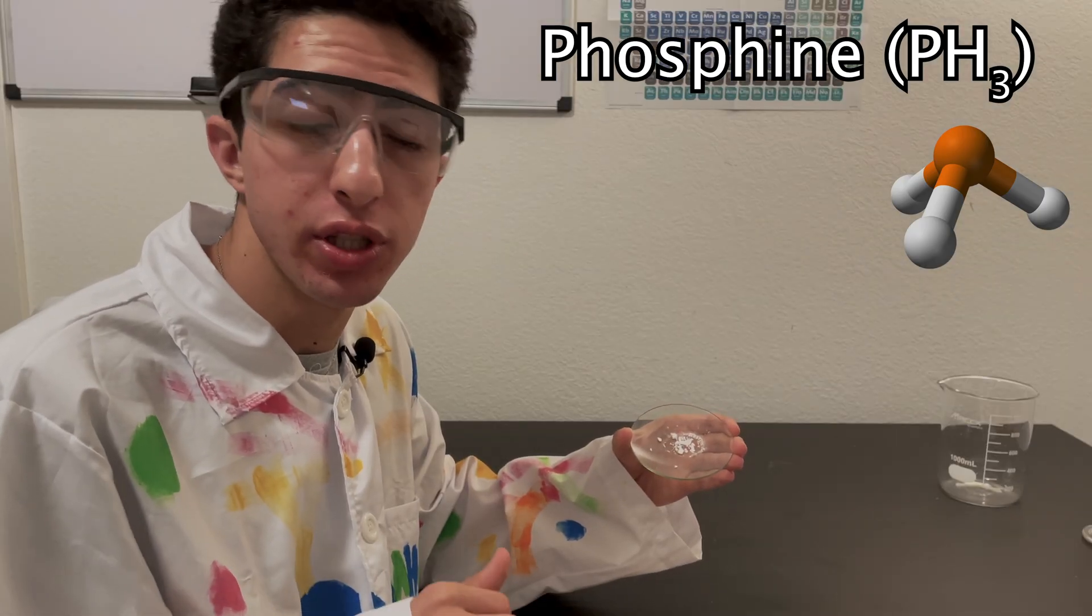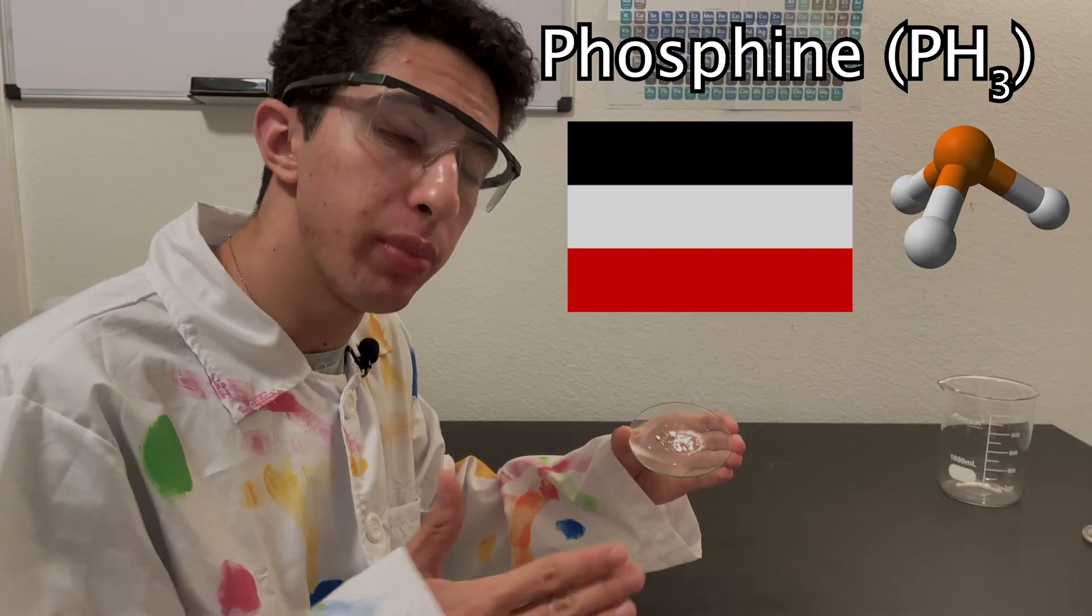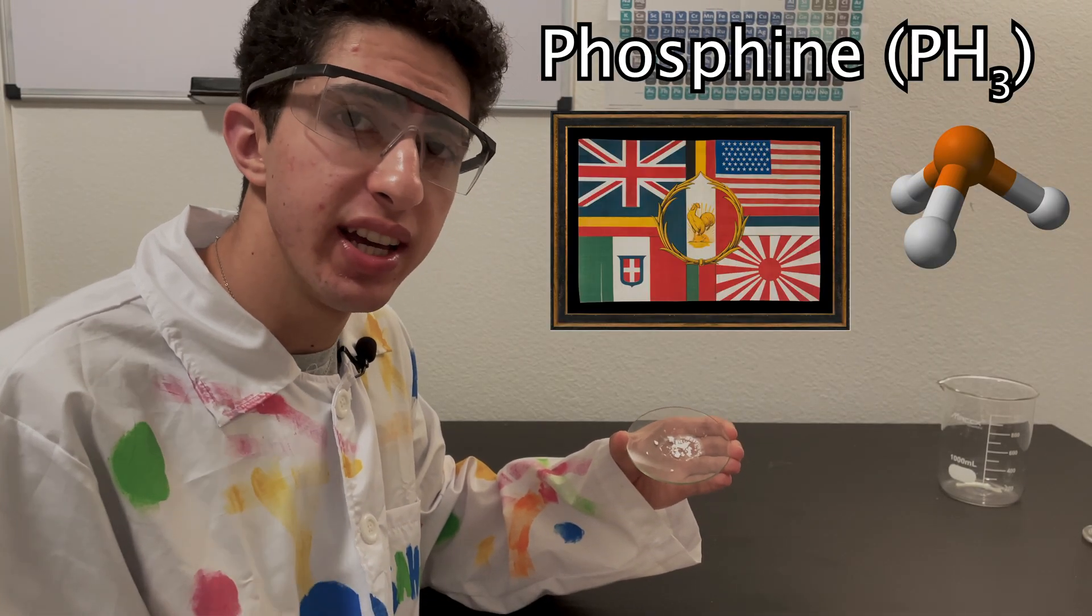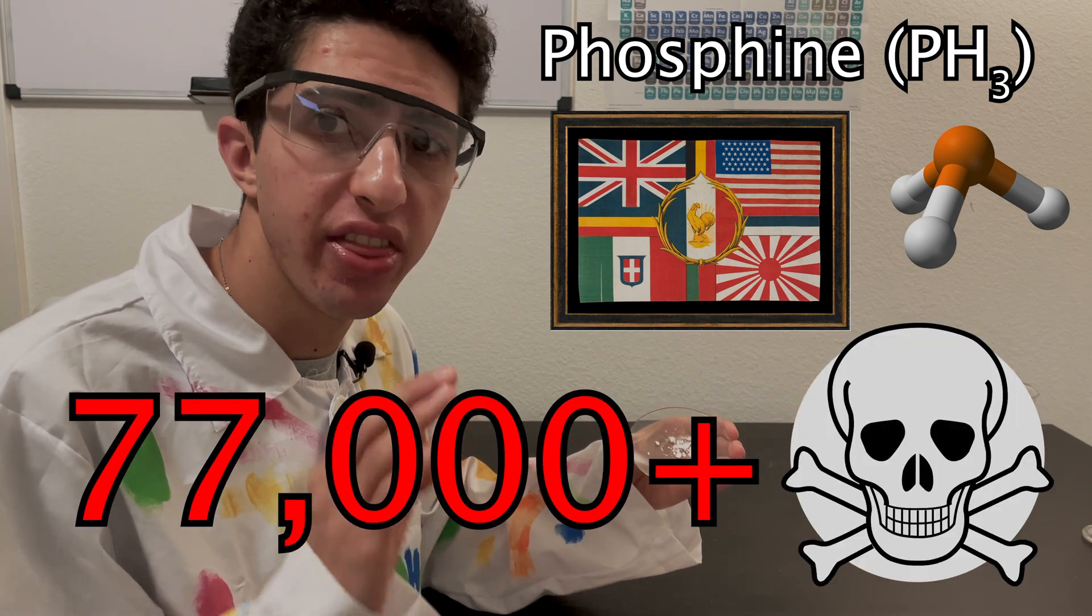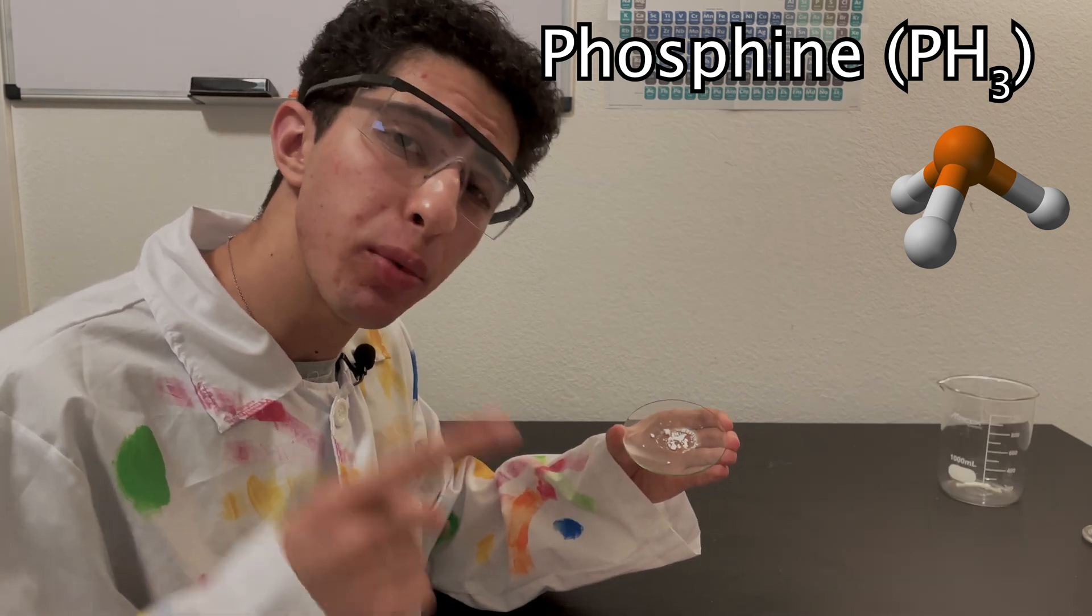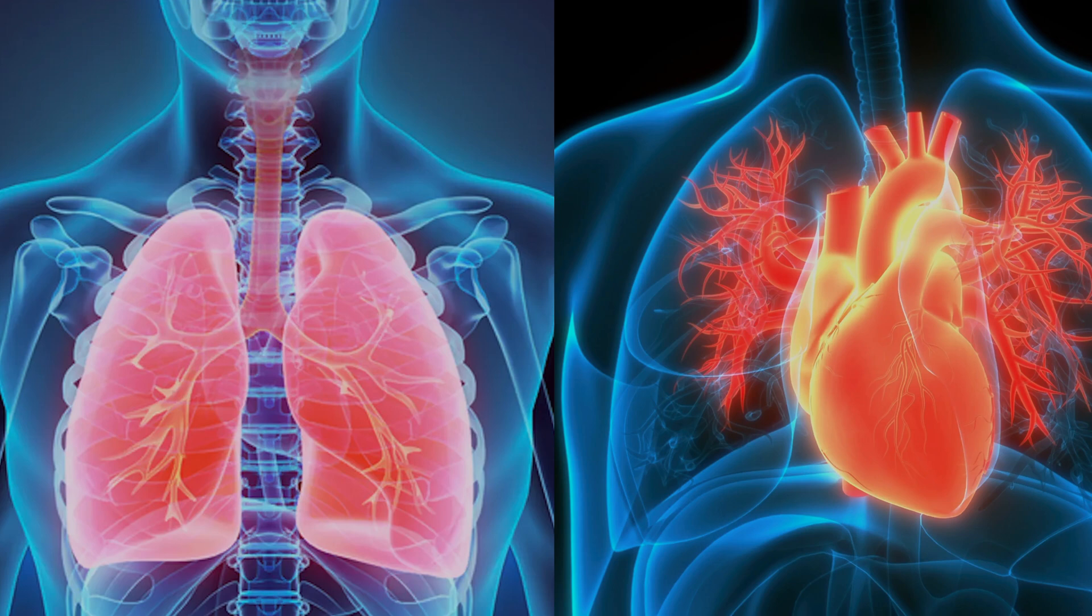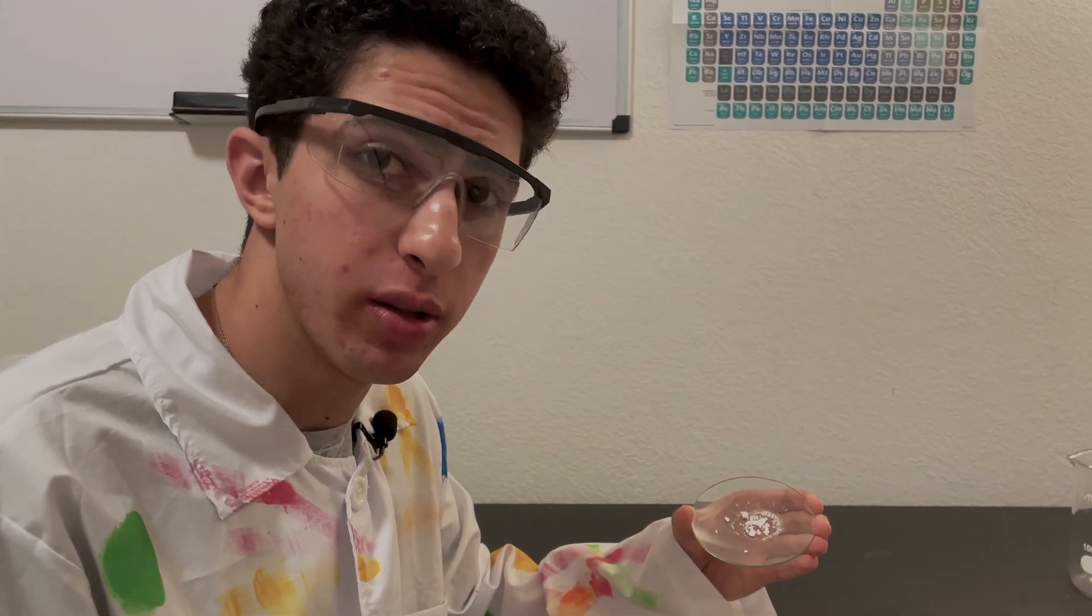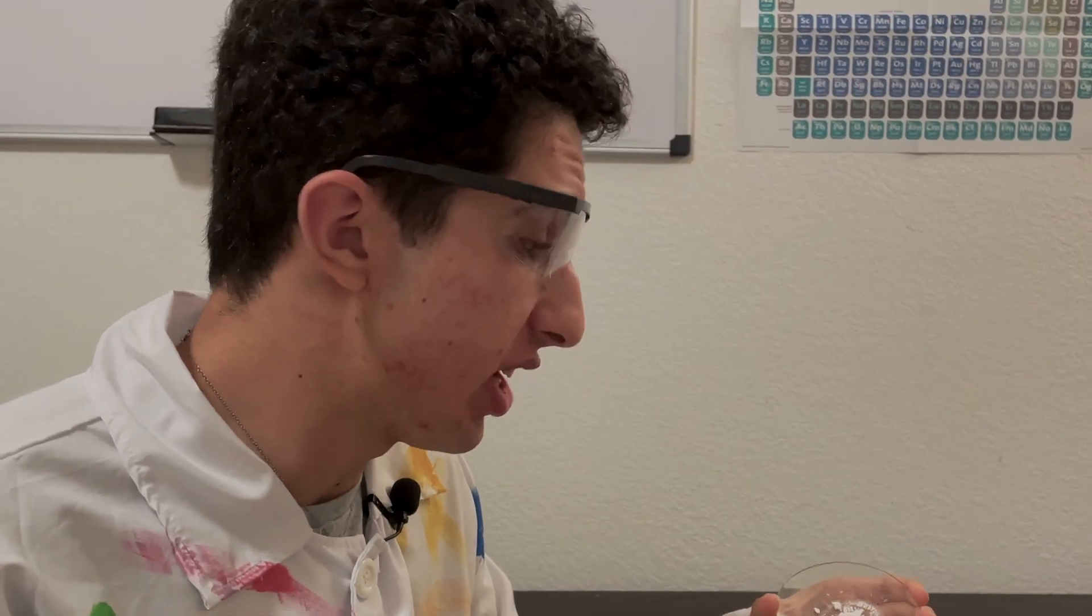Phosphine was one of the chemical weapons used in World War I, initially by the Germans, but by the end of the war, almost exclusively by the Allies, and killed over 77,000 people. It can induce simultaneous respiratory and cardiac failure, meaning that both your heart and your lungs stop working at the same time. Just half a gram of this stuff is enough to kill me, and I don't even have to ingest it to die.